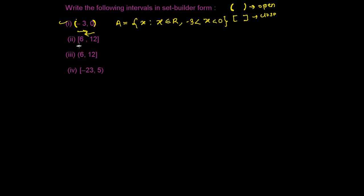For the second example, I'm seeing a closed bracket on both sides — a big bracket. So if this is set A, the elements will be: x such that x belongs to real numbers and x is greater than or equal to six — including six because it's a closed bracket — and less than or equal to twelve.